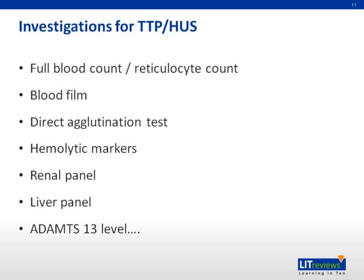Investigations for TTP or HUS are mainly to identify the presence of microangiopathic hemolytic anemia, MAHA, thrombocytopenia, renal impairment, and to rule out other possible differential diagnoses. We would also need to look for possible etiology of the TTP or HUS, such as autoimmune disease and infection.